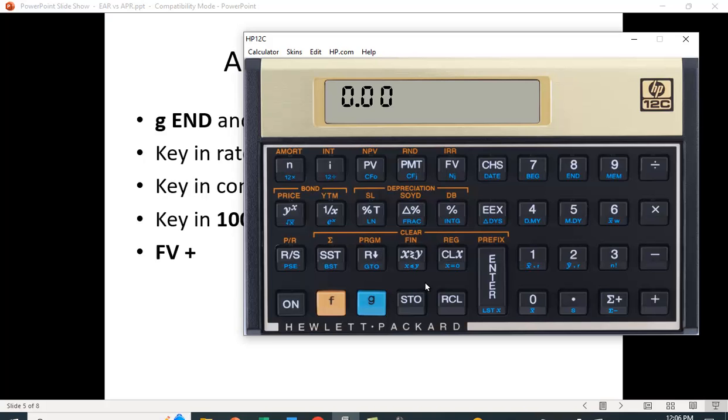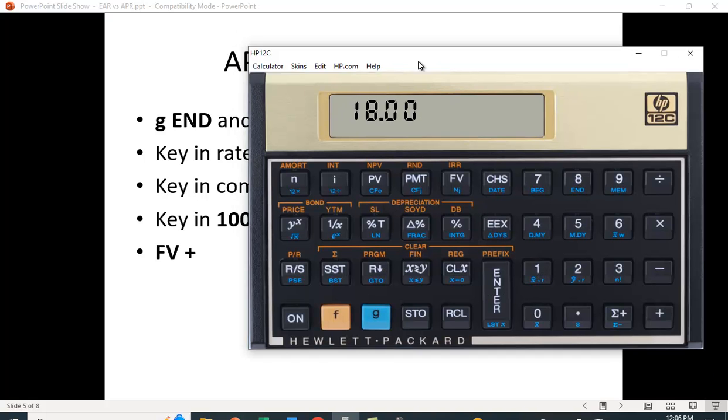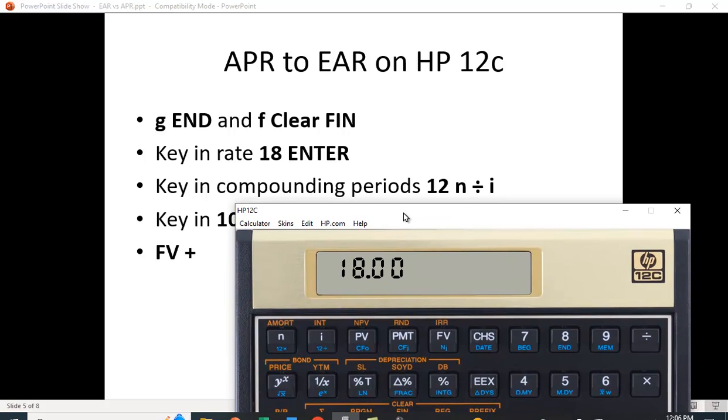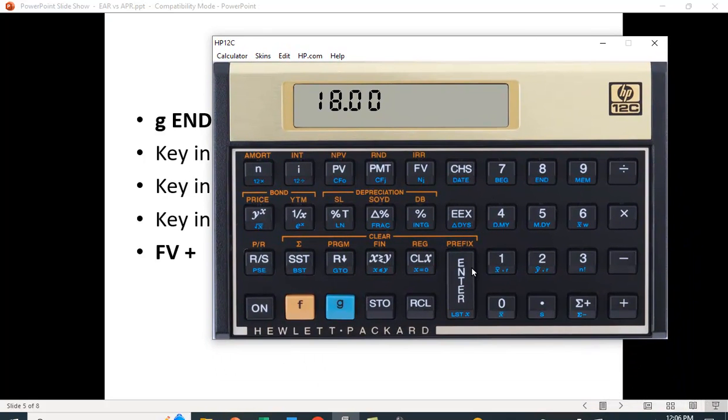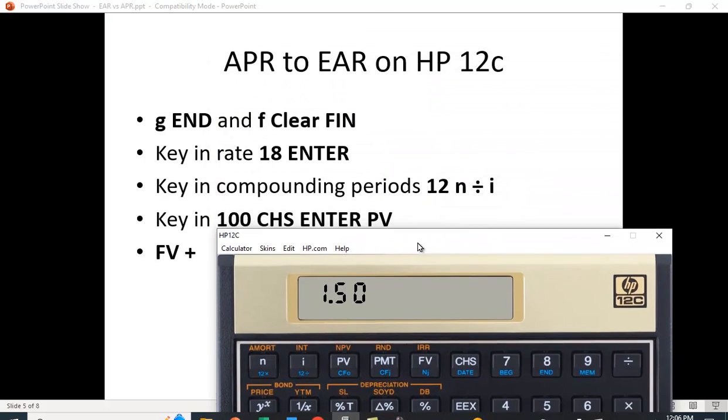Let's see if that works. So we've already cleared the functions. I'm going to put in 18 ENTER, and then 12 is N. We're going to say divided by. There's our 1.5%, and we're going to store that as the interest rate.